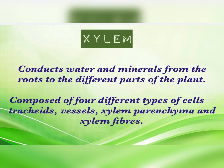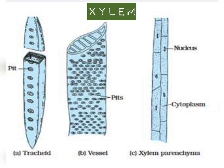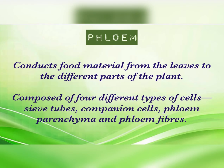Tracheids and vessels mainly perform the function of conduction. Xylem parenchyma performs lateral conduction, and xylem fibers provide strength to the plant — they are equivalent to sclerenchyma. This diagram of xylem shows the different cell types of xylem.